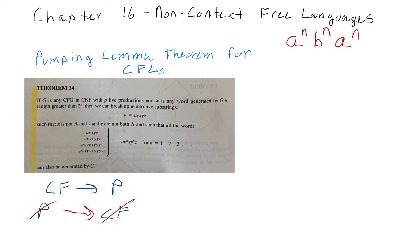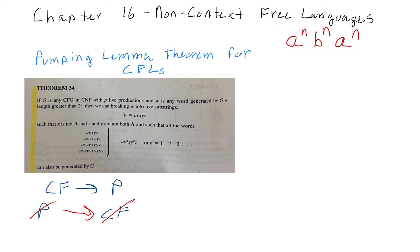Let's discuss a proof for this language and come up with a word in it. We'll use n equal to three: three a's, three b's, and another three a's. Now let's talk about how we might break this up into five separate substrings: u, v, x, y, and z.